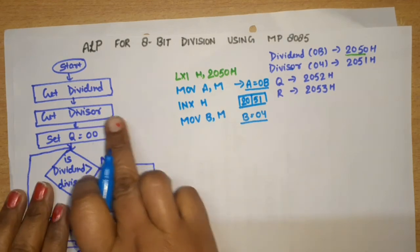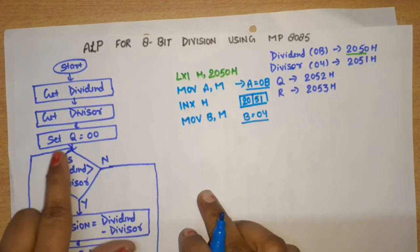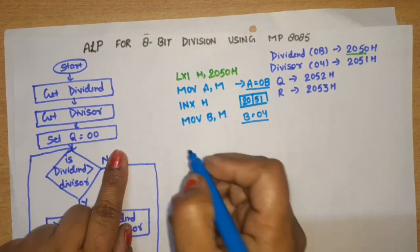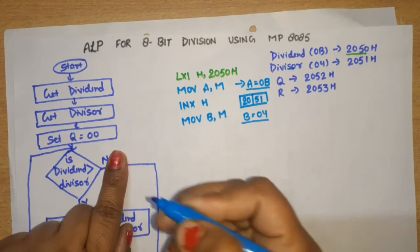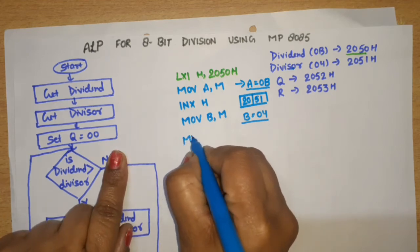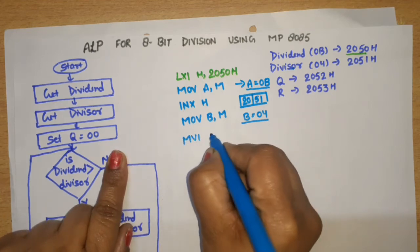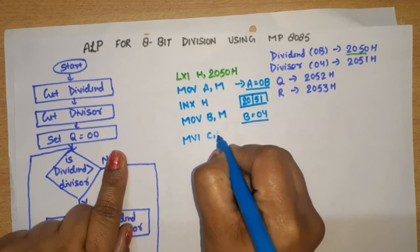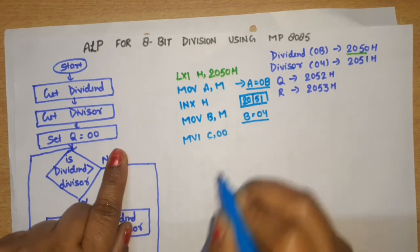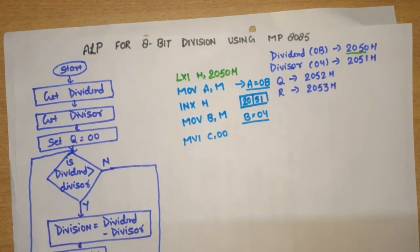Now initialize the quotient register: write MVI C, 00 — we set register C as the quotient register with initial value 00.